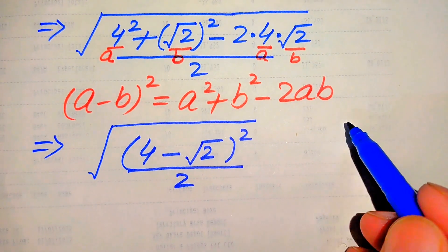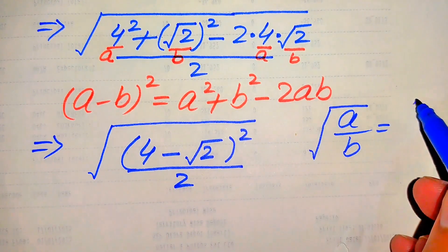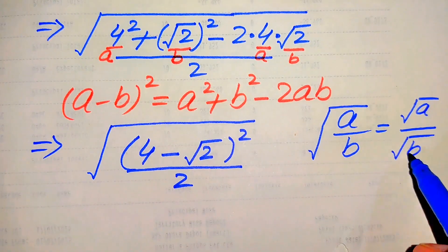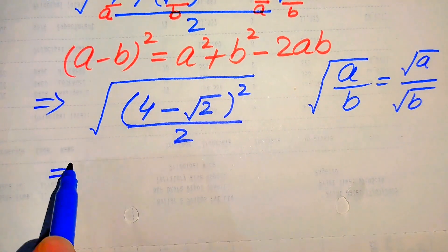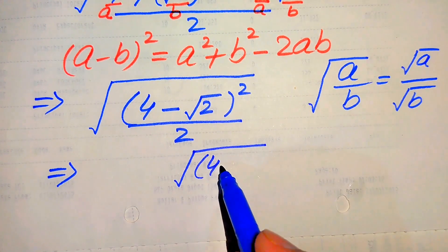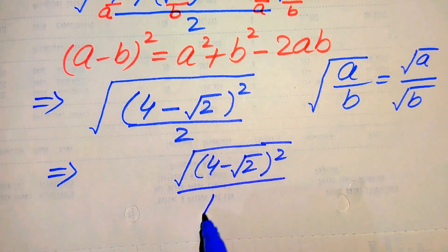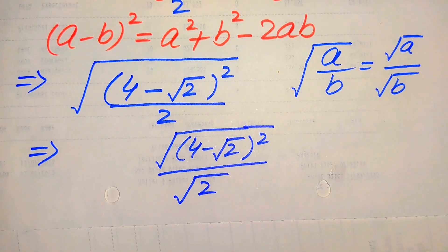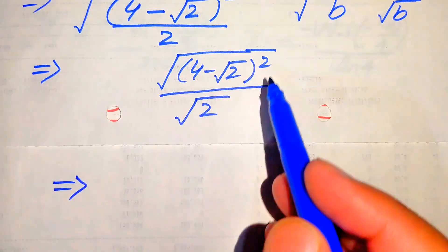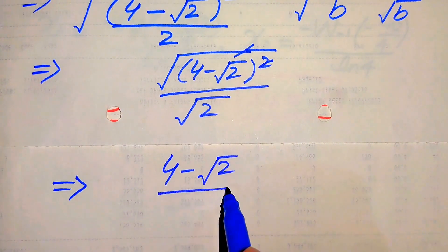Here we apply another radical law: the square root of (a over b) equals square root of a divided by square root of b. According to this rule, we break the square root sign and apply it to the numerator and denominator. The numerator becomes (4 minus square root of 2) whole square under the square root, divided by square root of 2. The square and square root cancel, giving us (4 minus square root of 2) divided by square root of 2.